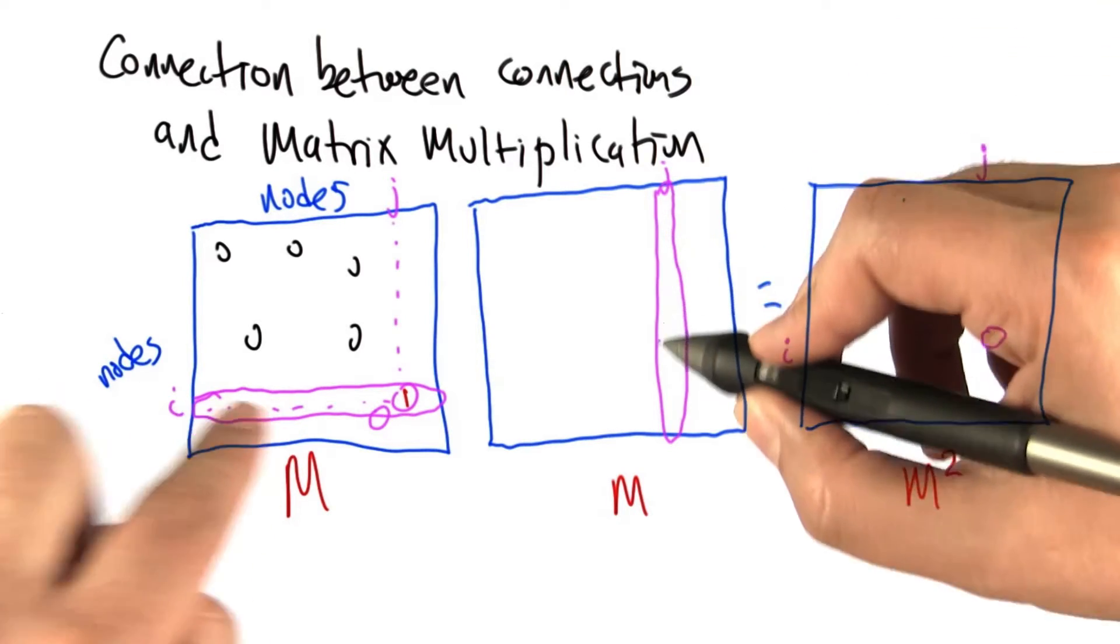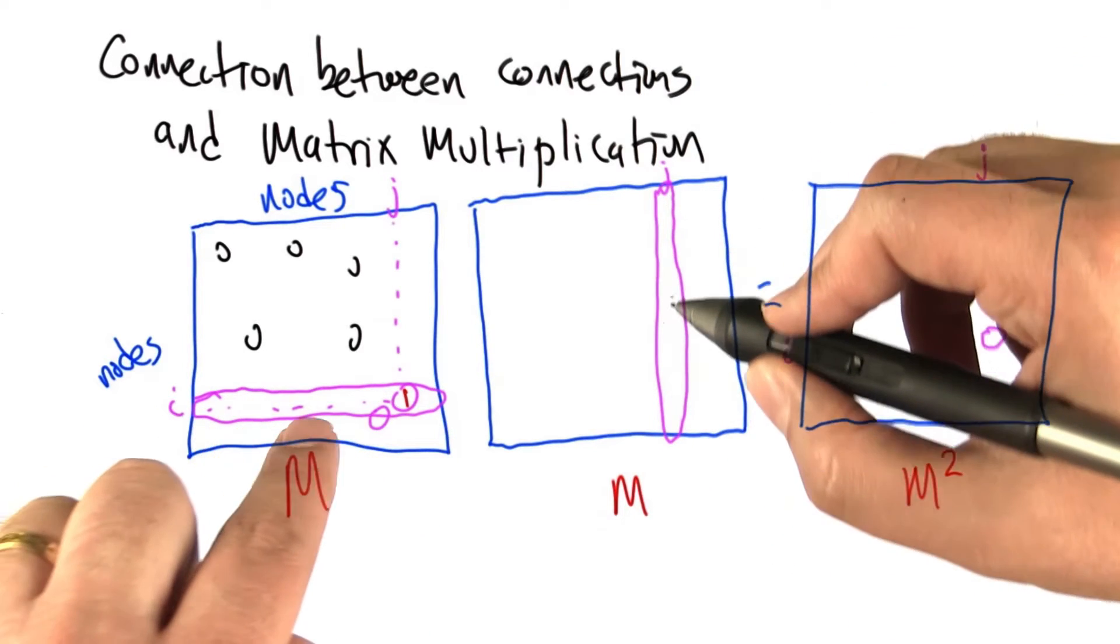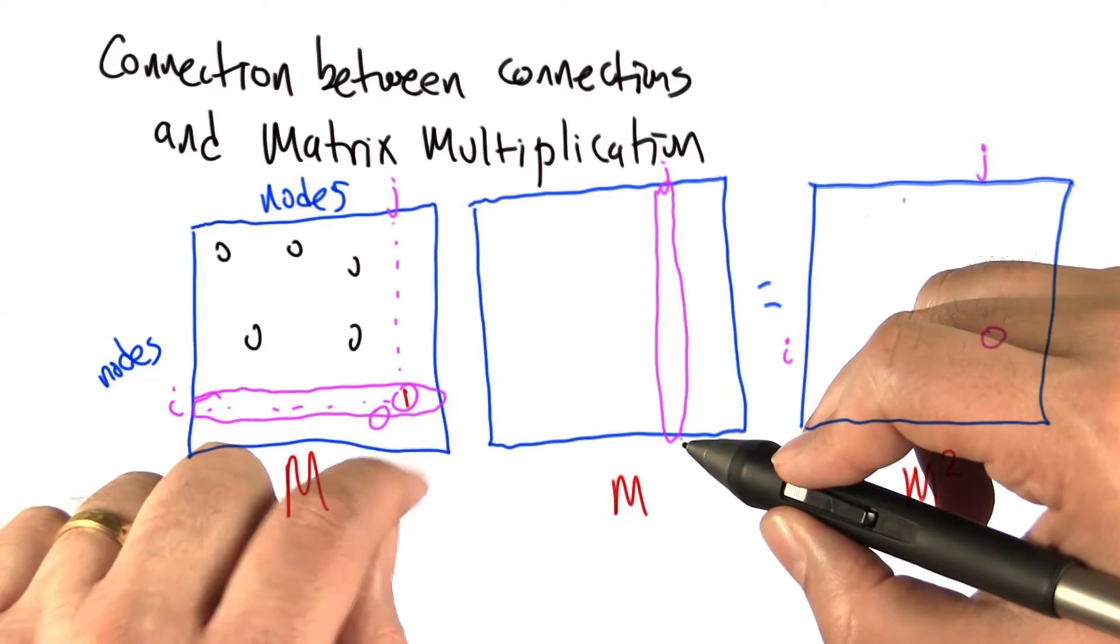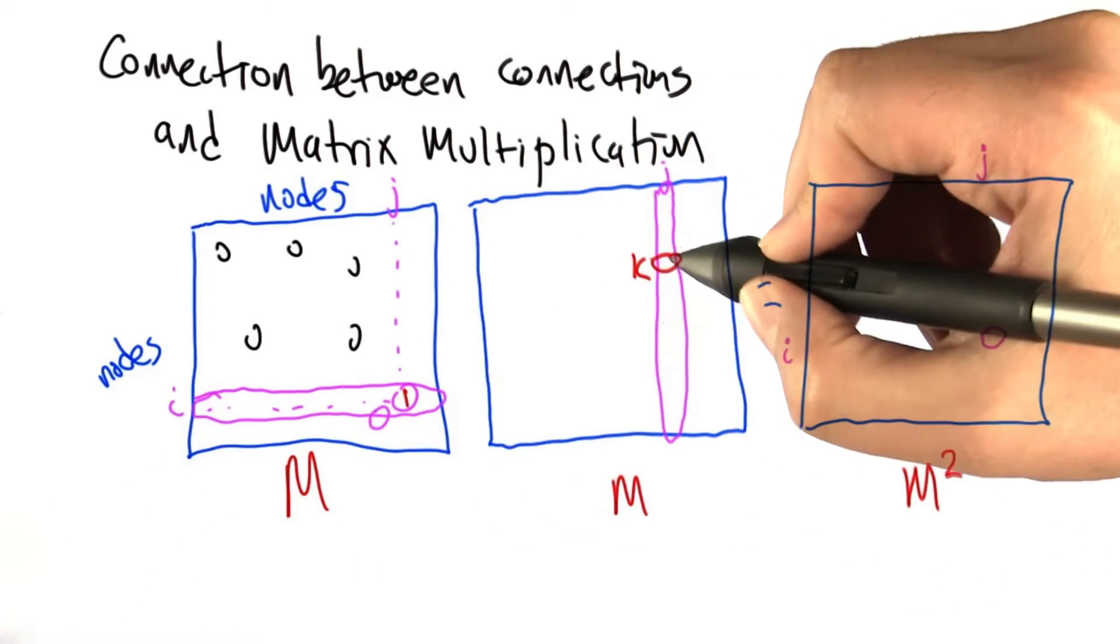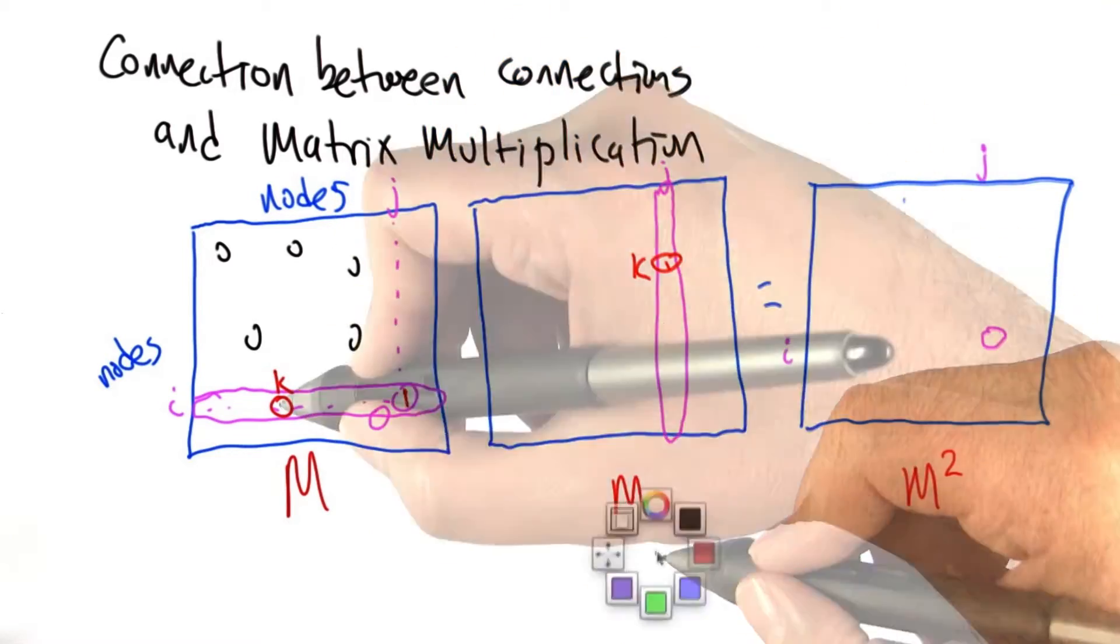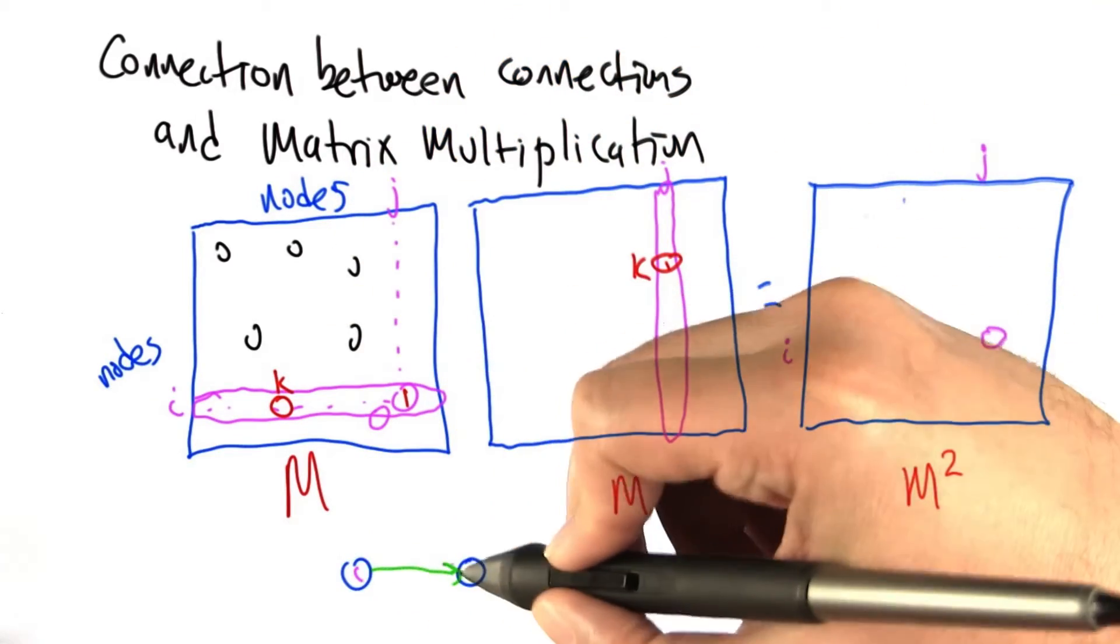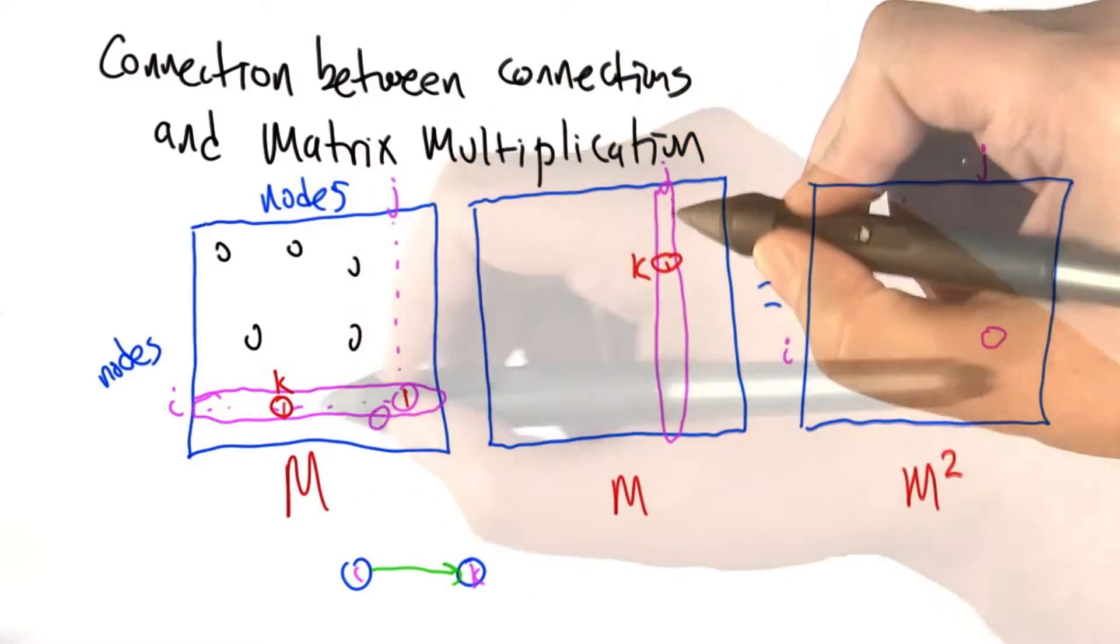So this multiplication of this row times this column is exactly a count of the number of 1's that the two vectors have in exactly the same positions. Now what does it mean for them to have a 1 in the same position? Let's imagine that there's a 1 in position k here, and at the same time in position k here. This position here means that our graph has a link from i to k.